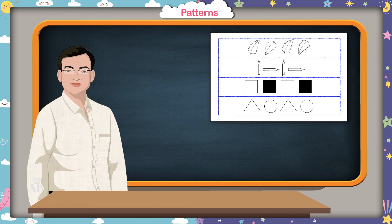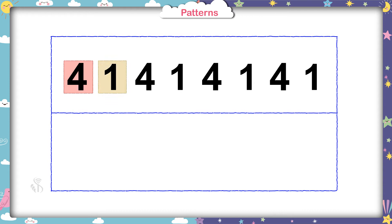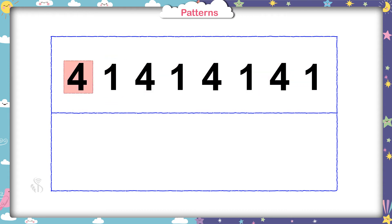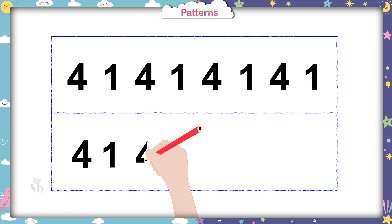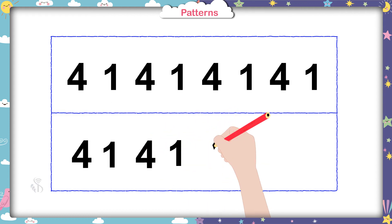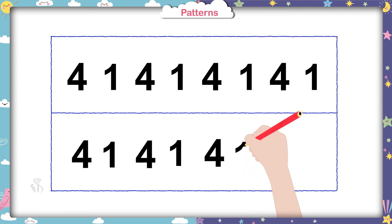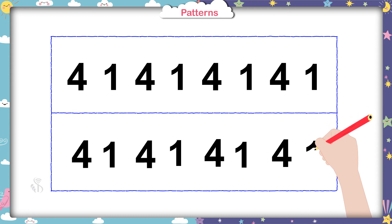I have made a pattern here using two numbers: four and one. I have written number four first and number one later. We have to write these numbers in the same order to make the pattern. Now you have to make the pattern in the same manner: four, one, four, one, four, one.